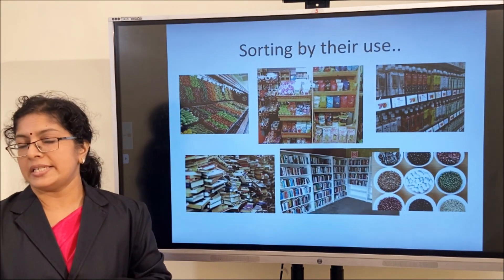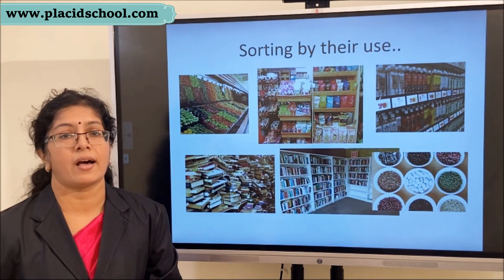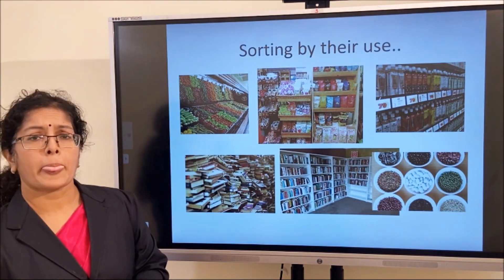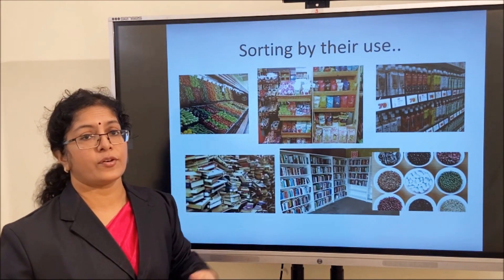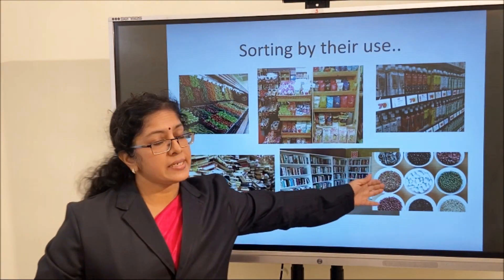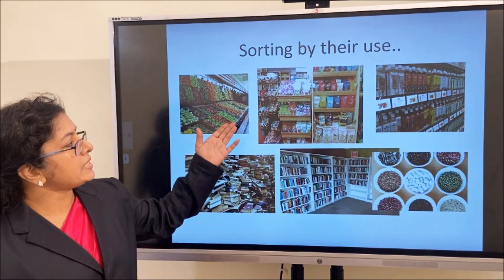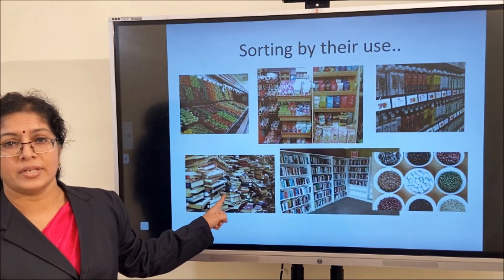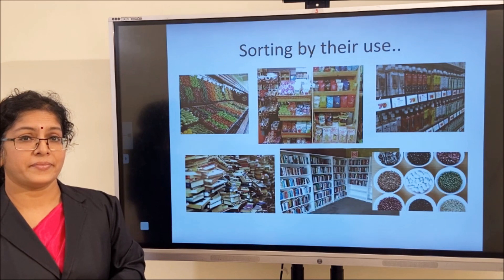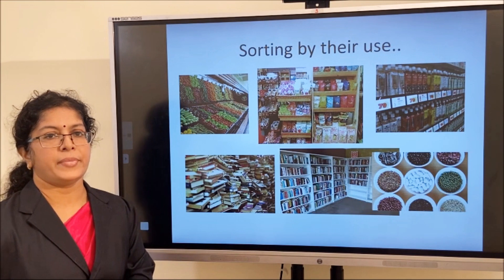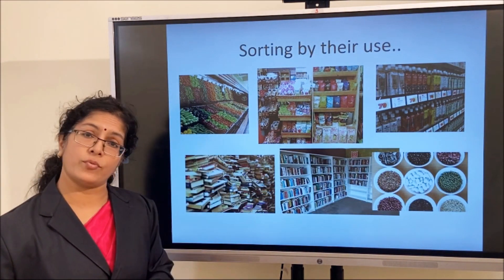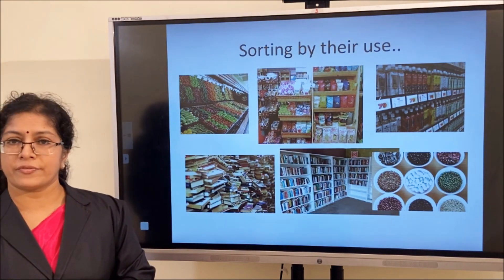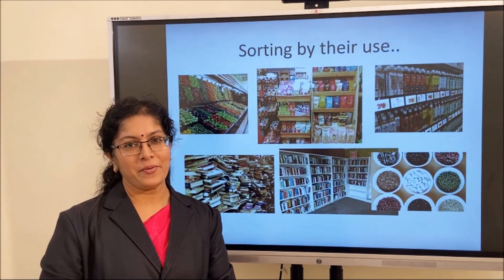See a supermarket — a variety of objects are arranged in different sections. Fruits and vegetables are in one section, provisions in another area, preserved items and cereals and pulses in different places. This is for your convenience when selecting. Similarly, books not in order are hard to find, but when arranged on a shelf by author's name or subject, it is easy to select what you need. This is the advantage of sorting.